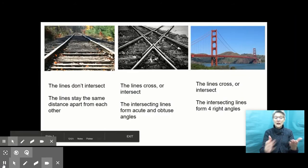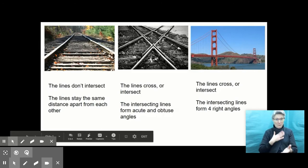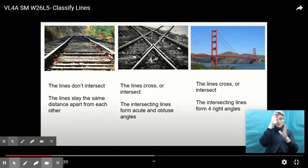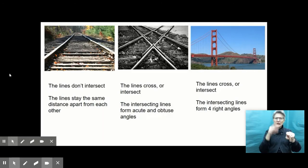Here are some of the notes that I jotted down. In the first picture of the railroad tracks, I noticed that the lines don't intersect. Also, the lines stay the same distance apart from each other. I'm looking at these railroad lines, and I see that they're continuing on. Although it doesn't look like it in the picture, I know that railroad tracks stay the same distance apart so that the train can stay on those tracks.